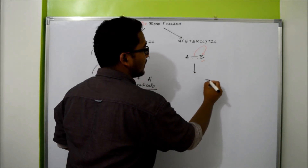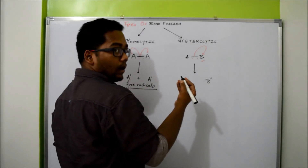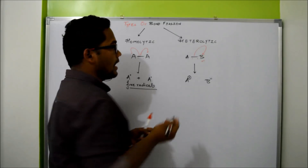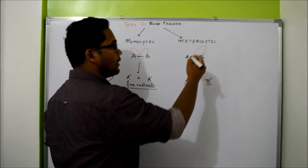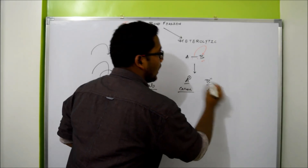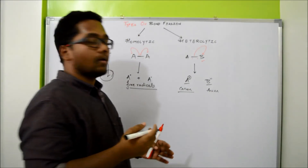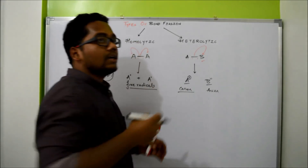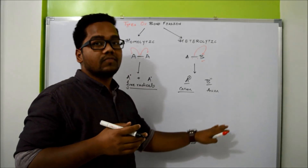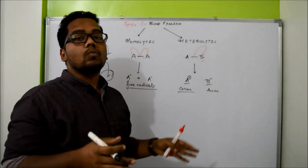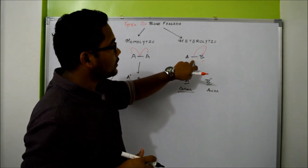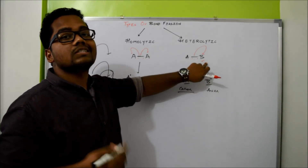Because B has more electronegativity than A, B will have an extra electron and will acquire a negative charge. Atom A, having lost one electron, will acquire a positive charge. In heterolytic bond fission, what you form is one cation and one anion. There is a charge development, and the ions formed are not of the same charge — both are not anions, both are not cations. That's why it is called heterolytic bond fission — the bond breaking is not equal or uniform.